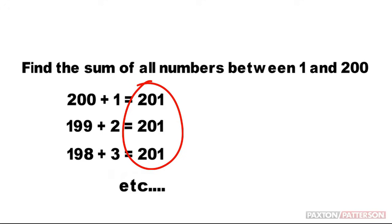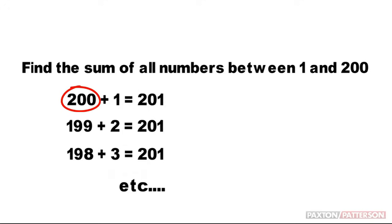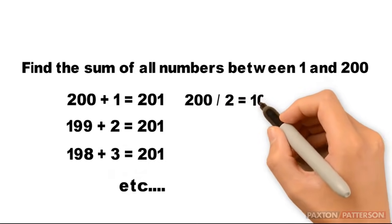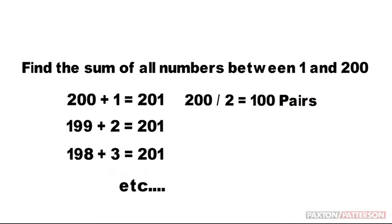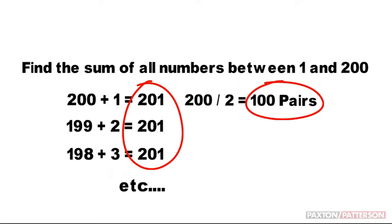We need to figure out how many times the 201 pattern repeats. You could count all the pairs, which would take a long time, or take the high number and just divide it by 2. 200 divided by 2 equals 100 pairs. If the sum of each pair is 201 and we have 100 pairs, we can now determine the sum of all numbers between 1 and 200.